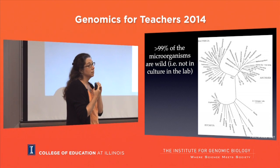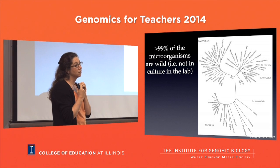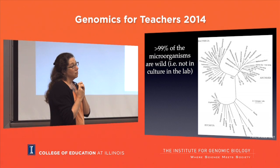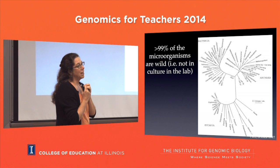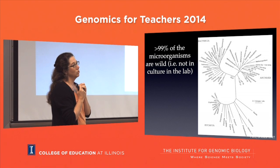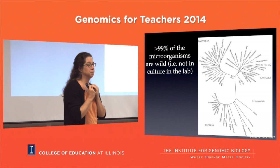A student asks if they sequenced all four base pairs or just one. At this point it was big dye terminator, so you could do all four at once.